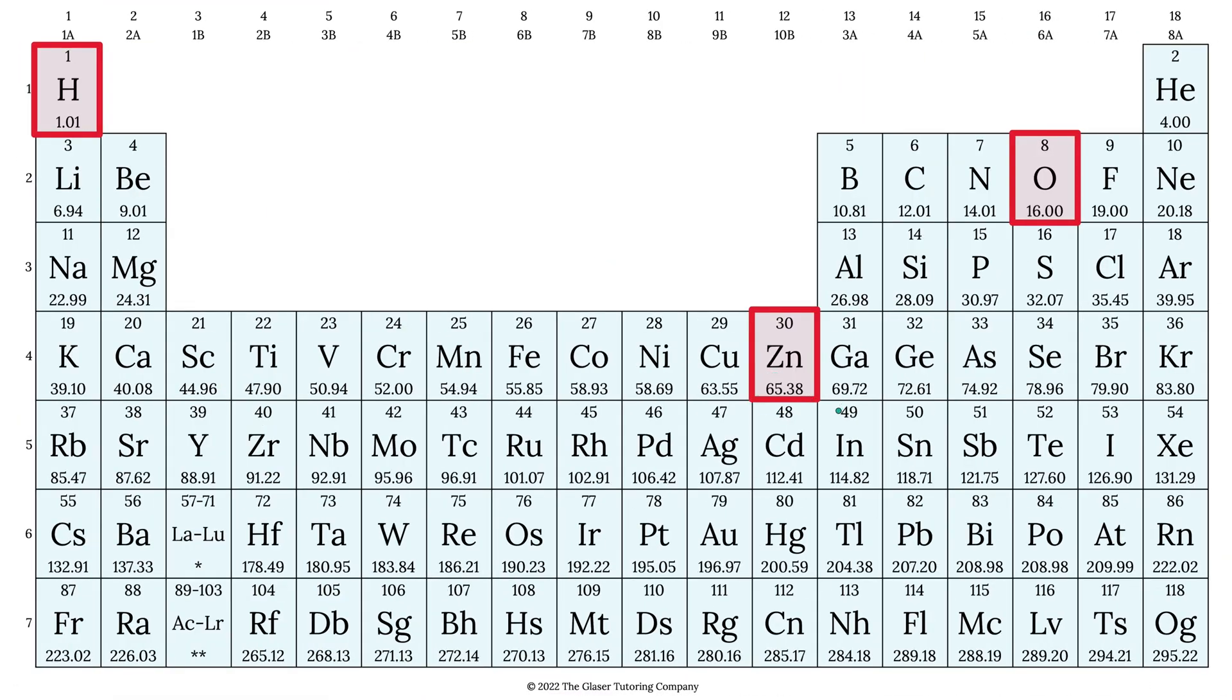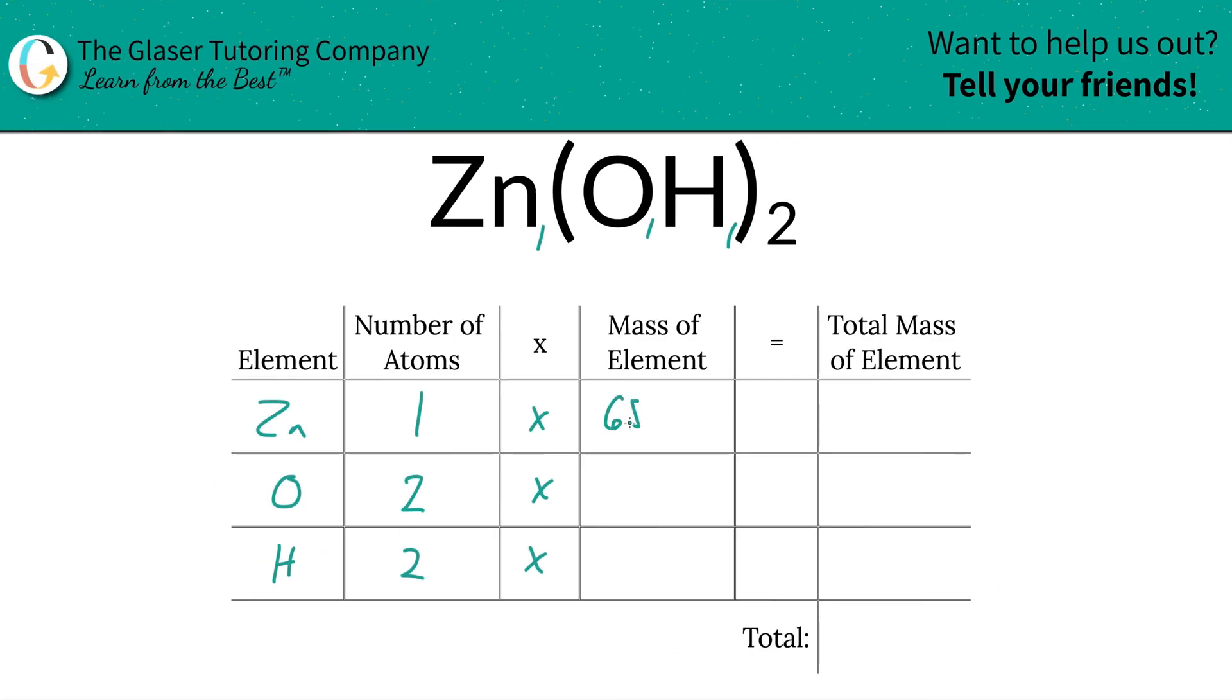So zinc is going to be 65.38, oxygen is 16, hydrogen is 1.01. So let's write it down. 65.38, oxygen is going to be 16, hydrogen is 1.01.